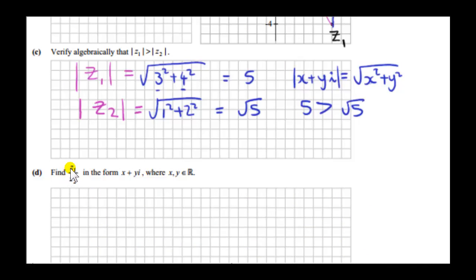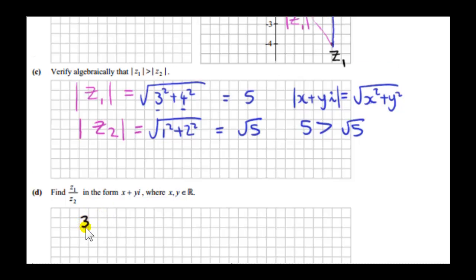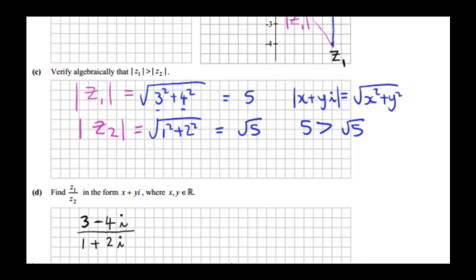Next we are going to get Z1 over Z2 in the form x plus yi. This question is asking us to write these two complex numbers as a single complex number. What we need to do is multiply above and below by the conjugate of the denominator. The denominator is 1 plus 2i, so the conjugate is 1 minus 2i. If we multiply below by that, we must multiply above by that to keep the expression the same.